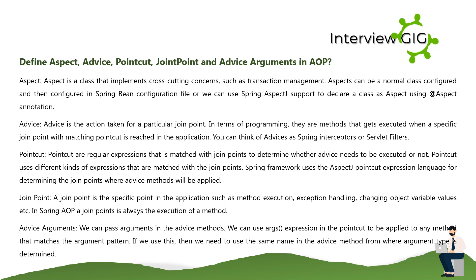You can think of advices as Spring interceptors or servlet filters. Point cut are regular expressions that are matched with join points to determine whether advice needs to be executed or not. Point cuts use different kinds of expressions matched with join points. Spring Framework uses the AspectJ point cut expression language for determining the join points where advice methods will be applied.